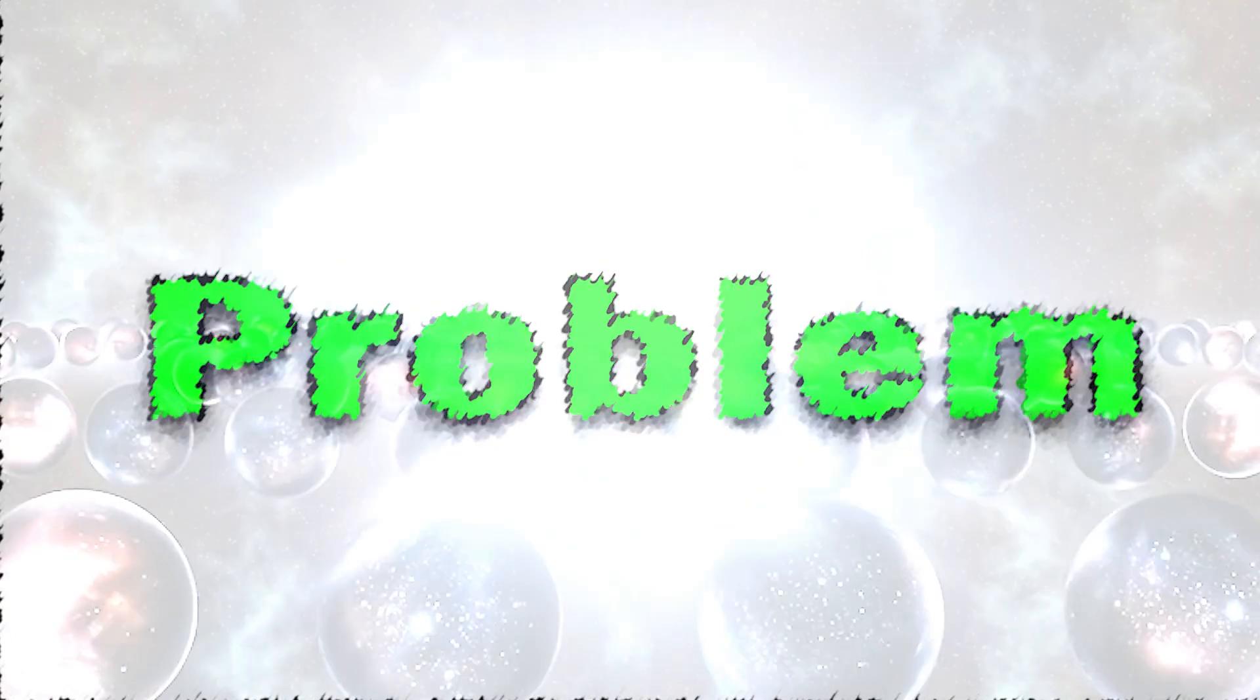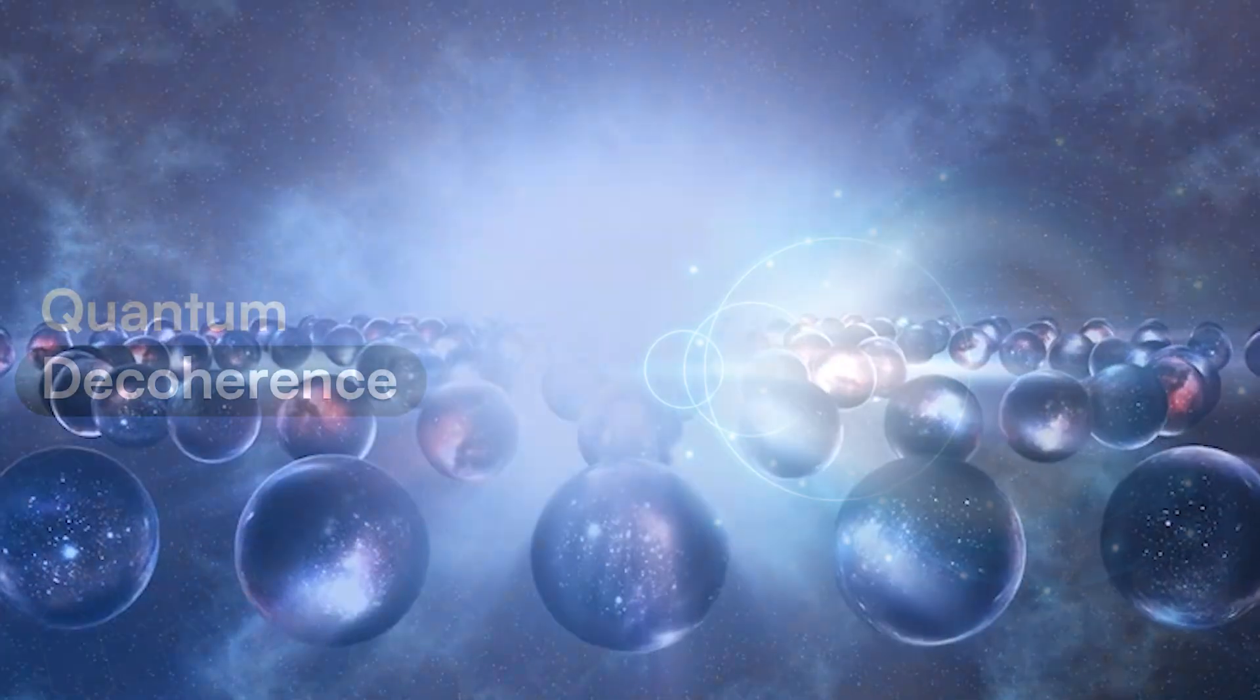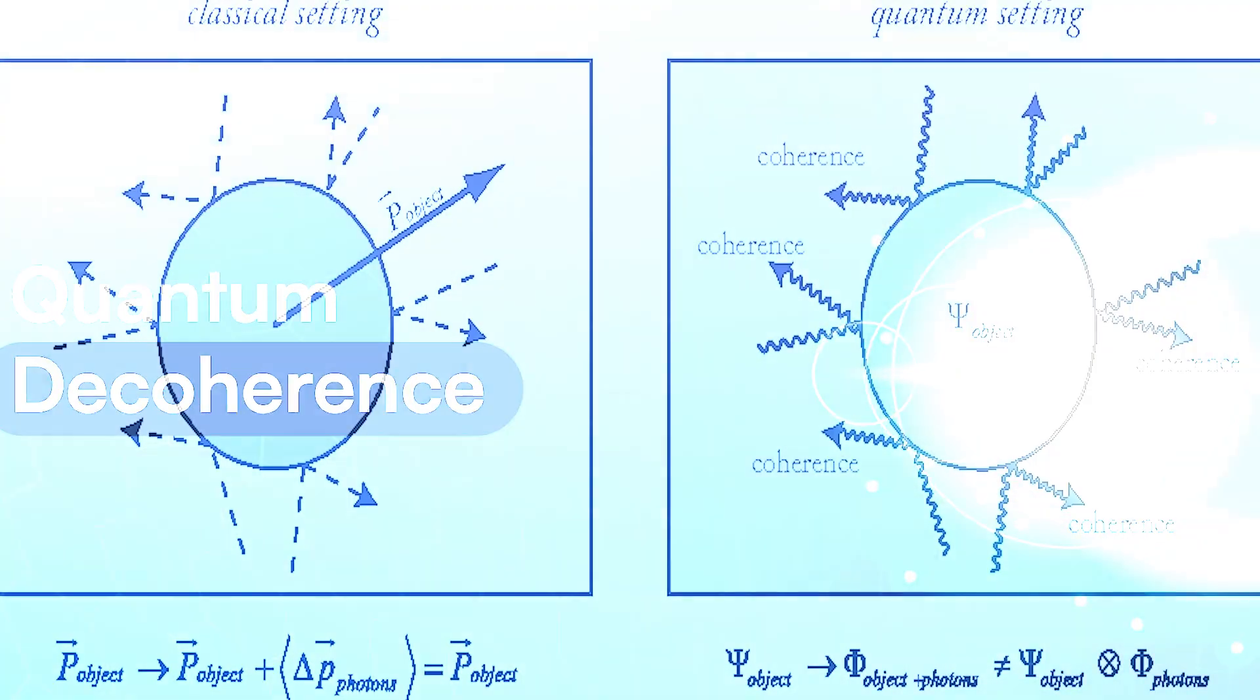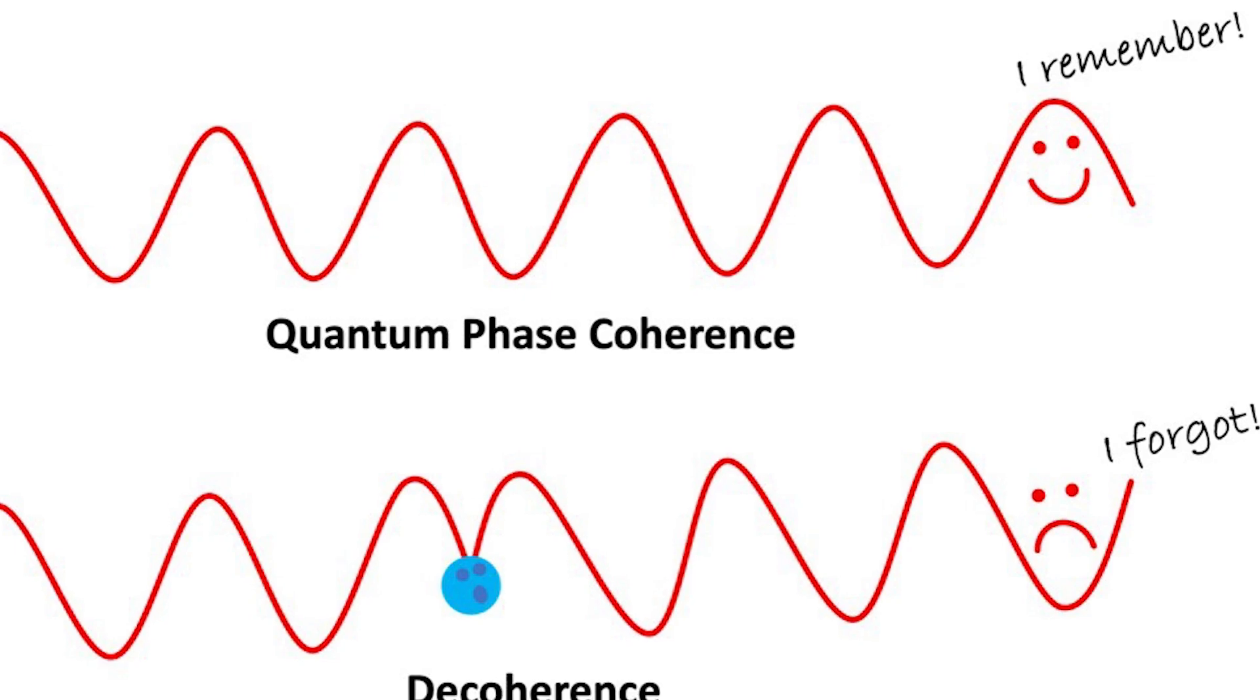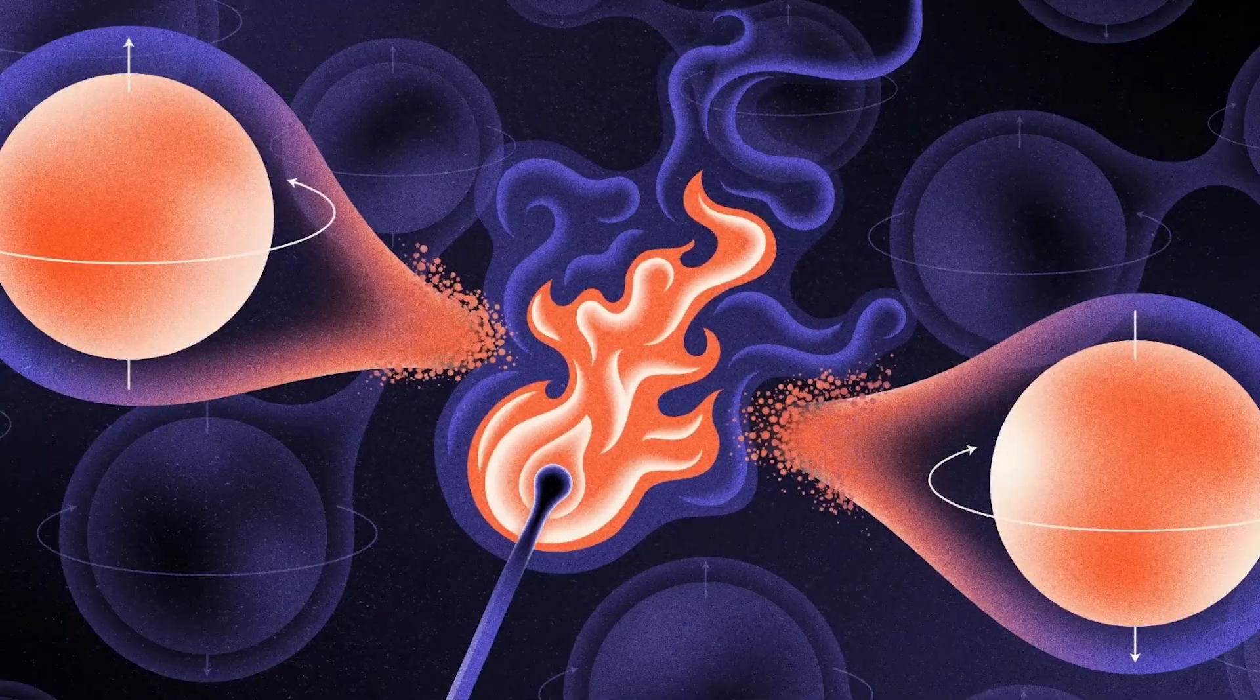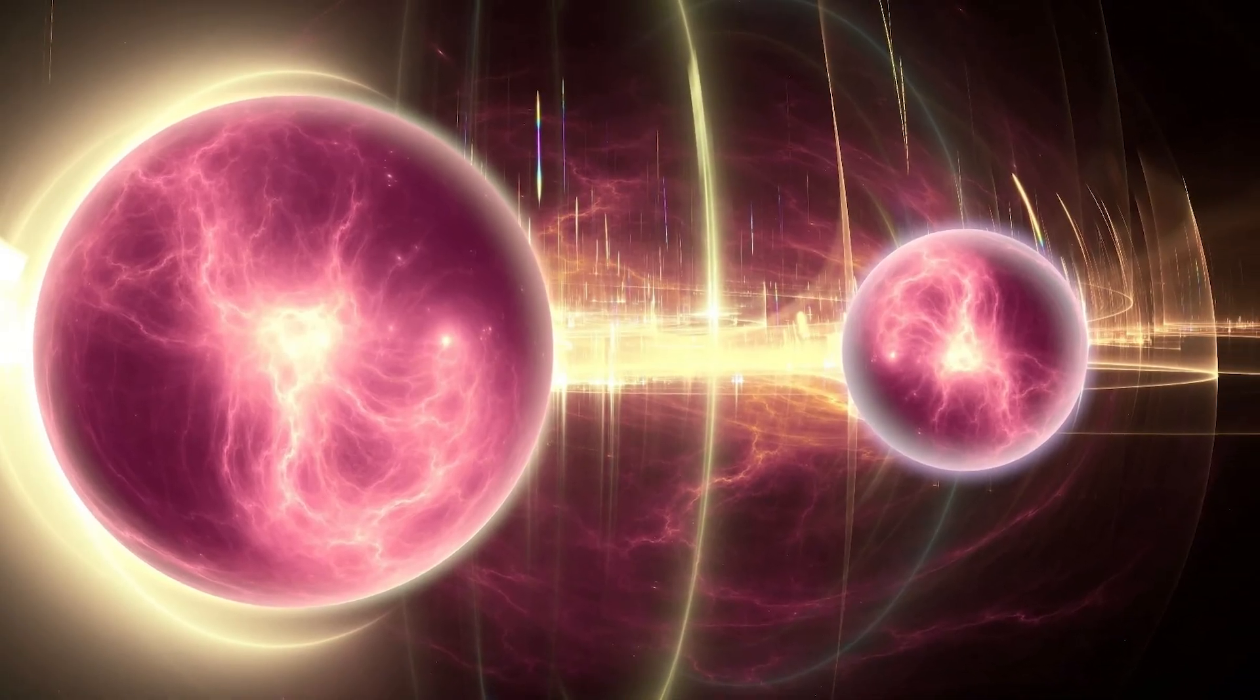But there's a problem. If universes are splitting all the time, why don't we notice? The answer came in the 1970s with the discovery of decoherence. Quantum systems can stay in a delicate superposition only if they're isolated. The moment they interact with their environment—light, atoms, temperature—they become entangled, and their different outcomes lock into separate, non-communicating branches.